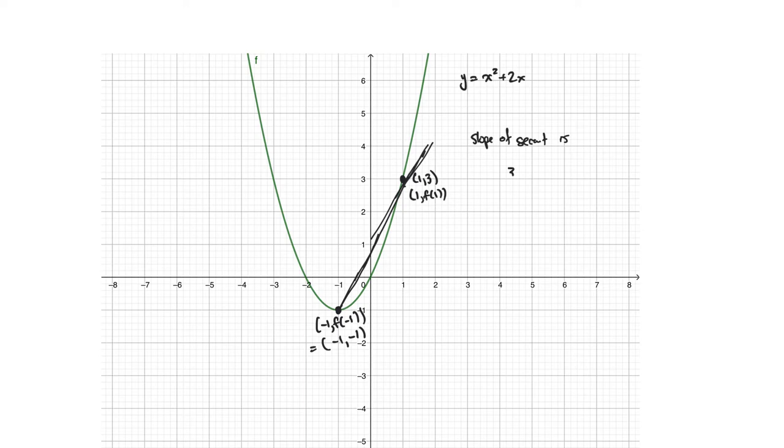So in this case, my y coordinates, I ended at 3 and I started at negative 1. So 3 minus negative 1 would actually be plus 1. And then the run here, I went from negative 1 to 1. And so the slope of that line is 4 over 2, or 2.